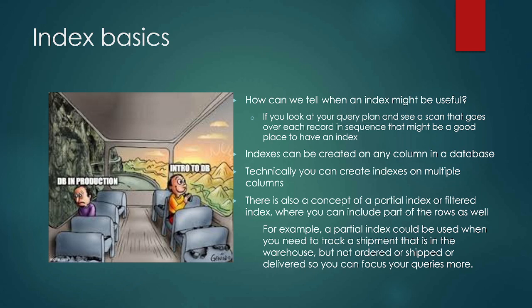Indexes can be created on any column. I was using the example of author, but you could absolutely organize things a different way. You could organize patient records by patient, by doctor, by insurance, or by birthday — it doesn't matter. You can also use a partial index, or filtered index, which lets you include only part of the rows. For example, if you wanted to track a shipment in the warehouse, you don't want 'ordered,' 'shipped,' or 'delivered' — you just want to track things that are currently in the warehouse, matching a status of 'in warehouse.'